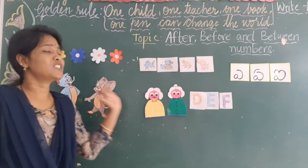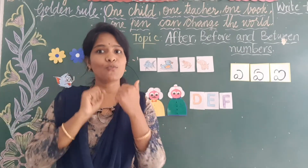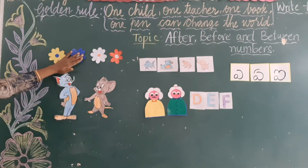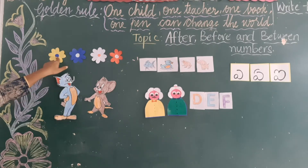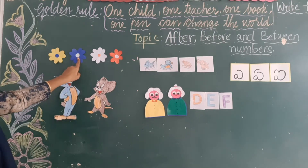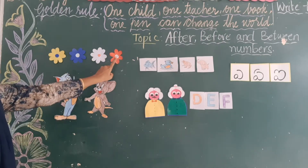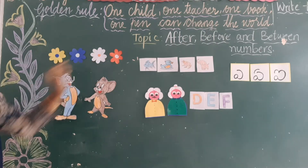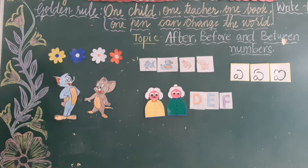I want to decorate my board colourfully with colourful flowers. So first I have taken some colour papers and I have cut a yellow colour flower. After yellow, I have cut a blue colour flower. After blue, I have cut a white colour flower. After white, I have cut a red colour flower. So four flowers I have cut to decorate my board colourfully.